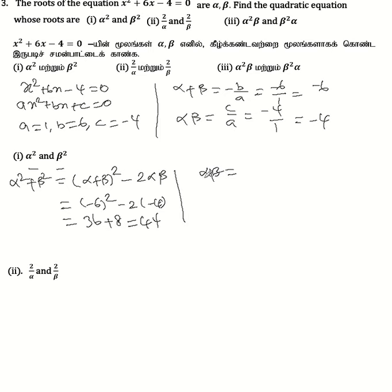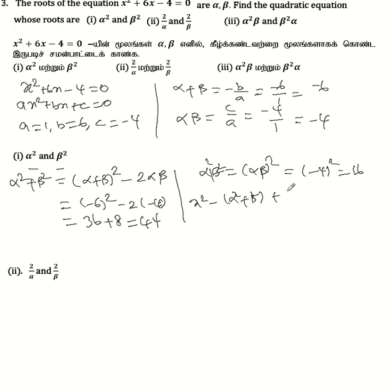The product of roots alpha² and beta² equals (alpha·beta)² = (-4)² = 16. So the quadratic equation is x² - (sum of roots)x + (product of roots) = 0, giving x² - 44x + 16 = 0.